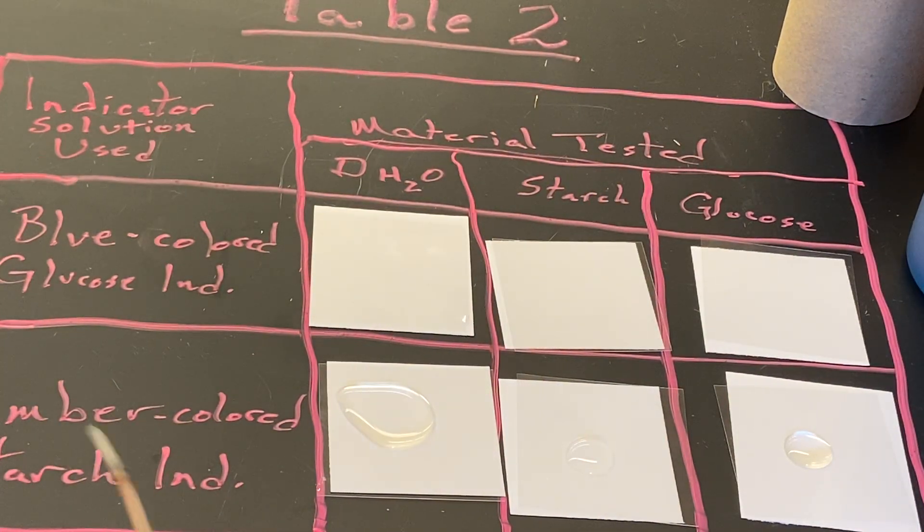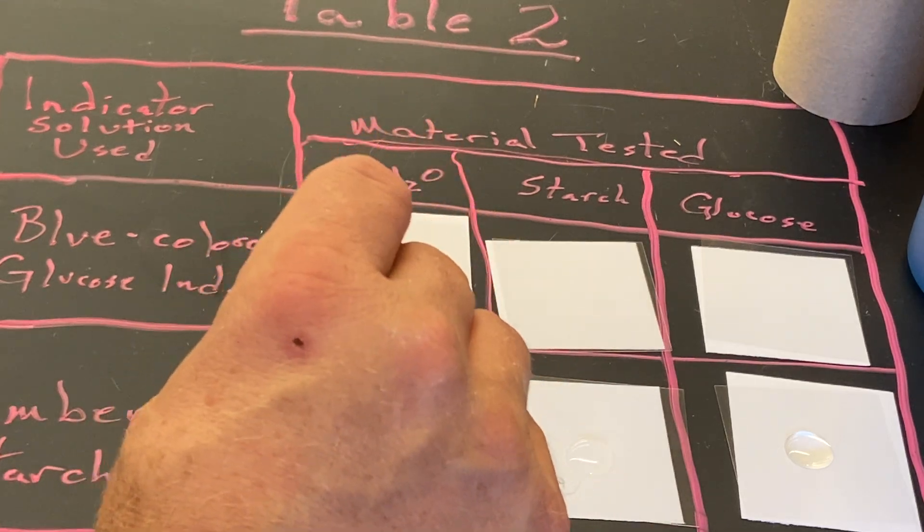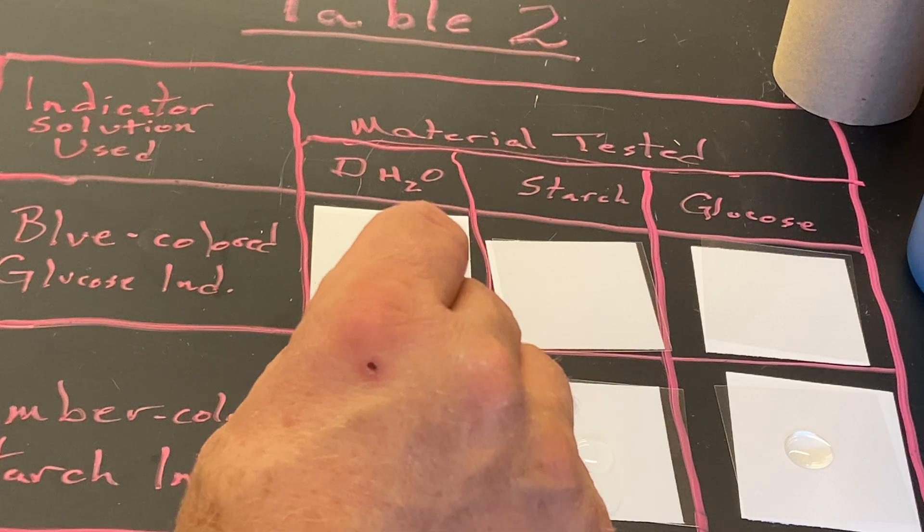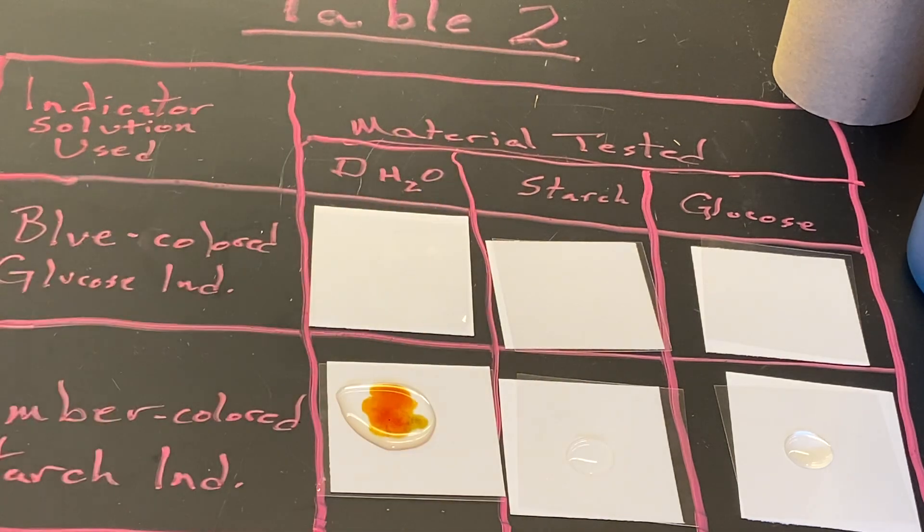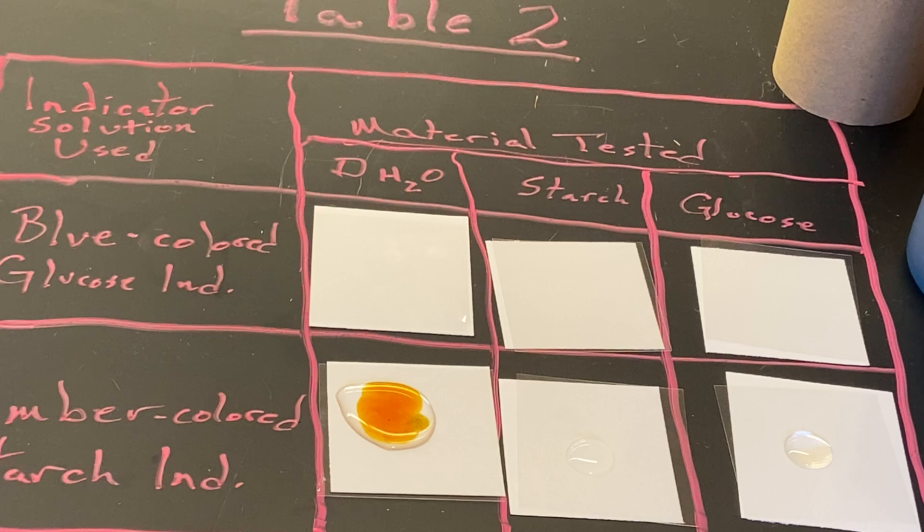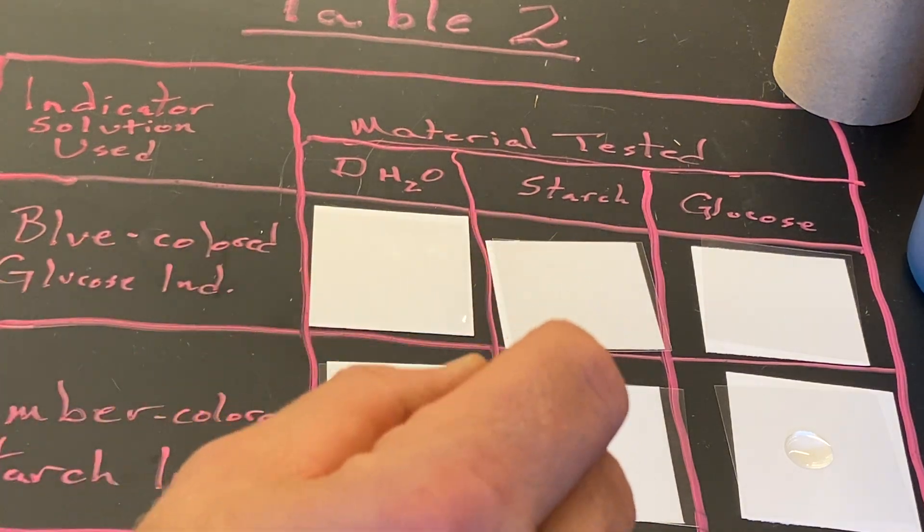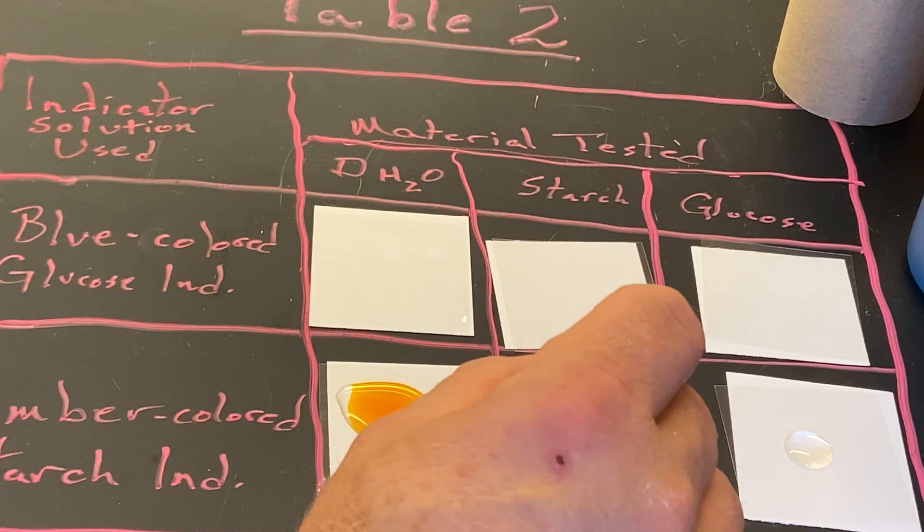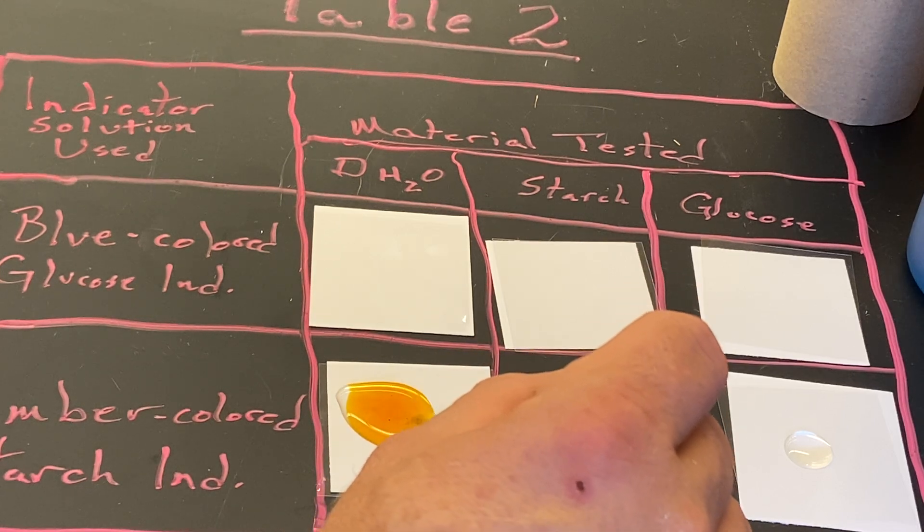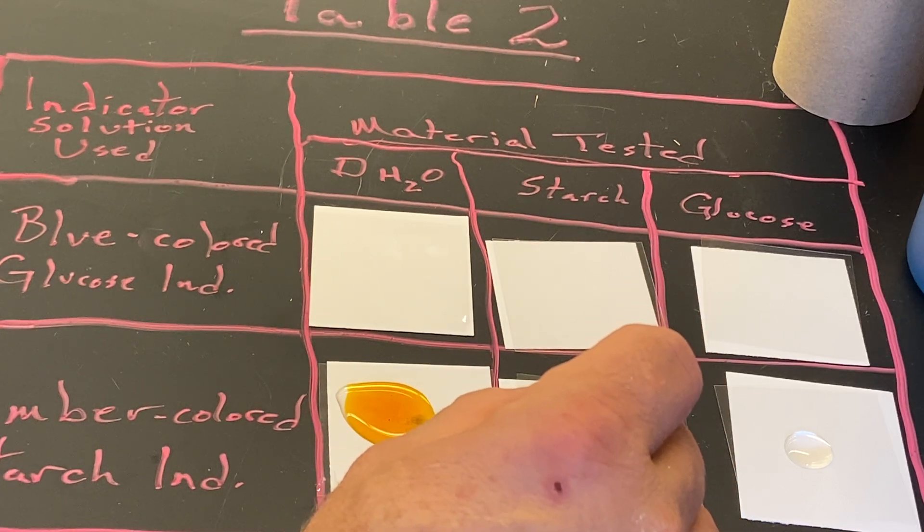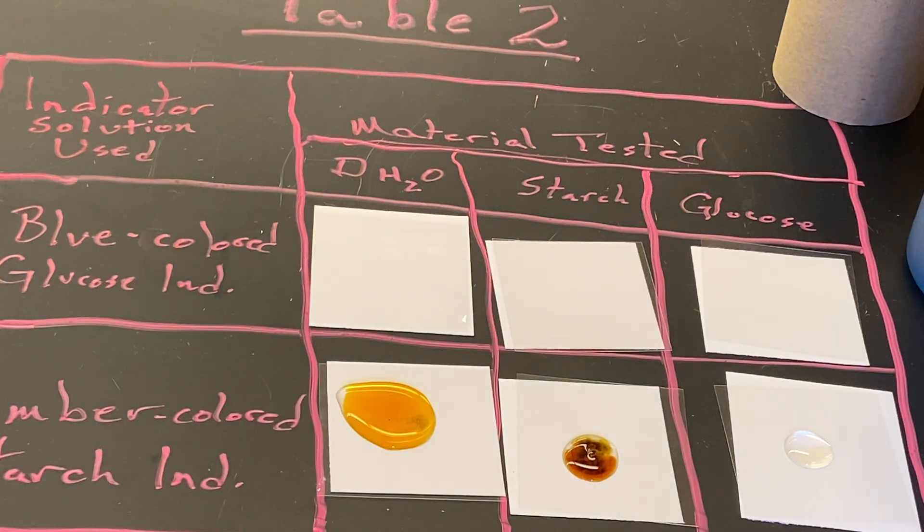Let's look at the distilled water first. It definitely did not turn black, but it did come out the color of the Lugol solution or amber colored testing solution. Here is the starch—it looks red right now, but let it sit for a few moments.